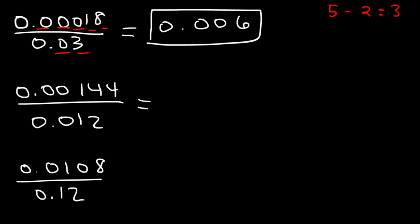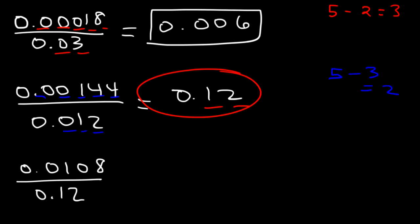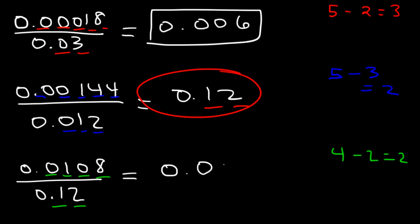Now looking at the next one. On top there are also five digits, and on the bottom we have three digits to the right of the decimal. 5 minus 3 is 2. Now, 144 divided by 12 is 12, so to have two digits the answer is going to be 0.12. And for the last one, there are four digits on top and two on the bottom. 4 minus 2 is 2. Now, 108 divided by 12 is 9, so this is going to be equal to 0.09.